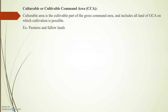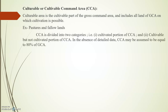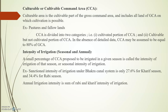CCA is divided into two parts: the cultivable cultivated portion, and the cultivable but not currently cultivated portion. Fallow land is an example of CCA. When we need to find CCA and don't have sufficient data, we consider CCA equal to 80% of GCA.